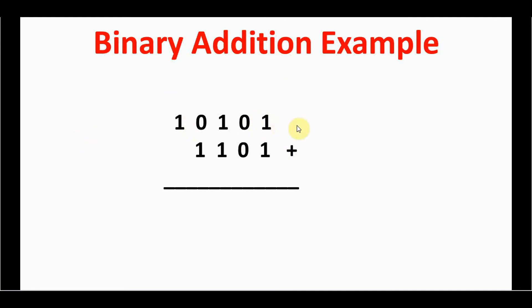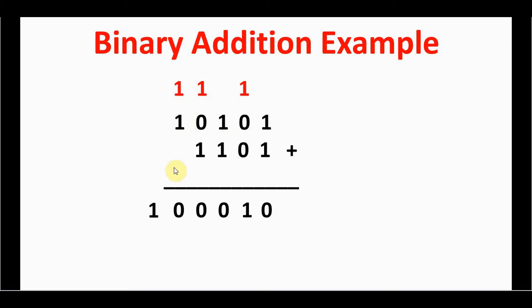Starting from the least significant bit, similar to ordinary decimal addition: one plus one equals one-zero, so zero is placed here and one is carried over to the next higher digit. Again one plus one gives one-zero; zero is placed and one is carried. Continuing this process, the final result — one-zero-one-zero-one — is the sum of the two binary numbers.